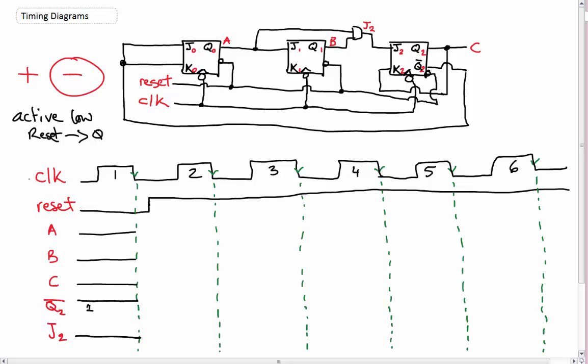So, since everything other than the reset relies on the clock, for our second clock pulse, everything is going to stay zero. Because, we're looking, for the next clock pulse, we're looking just a little bit before here, where the reset is still zero, which means that it's still actively resetting everything. So, A, B, and C are still zero. Now, Q2 is one. And, then J2 is zero.